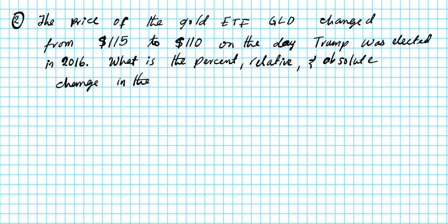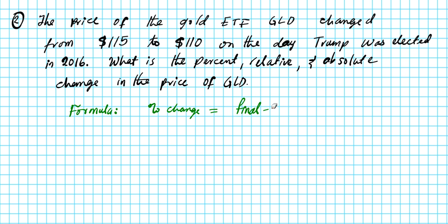Let's start by computing the percent change. The formula for percent change is: (final minus initial) — which is the same as the absolute change — divided by the initial, multiplied by 100. Let's write down the values for each component of this formula.